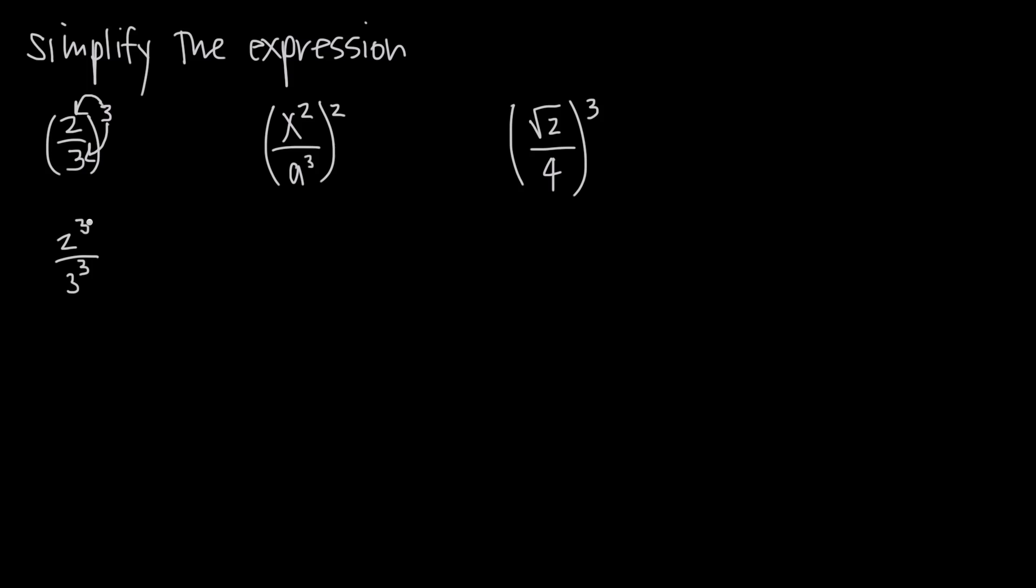Now when we look at this, 2 cubed we know is 8, and if we're not sure we can always write out 3 factors of 2. So 2 times 2 times 2, and in the denominator we have 3 factors of 3, or 3 cubed, which is 3 times 3 times 3.